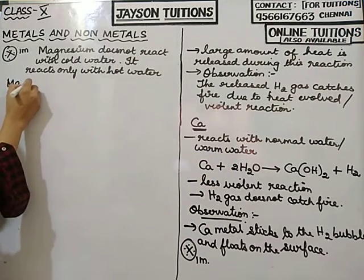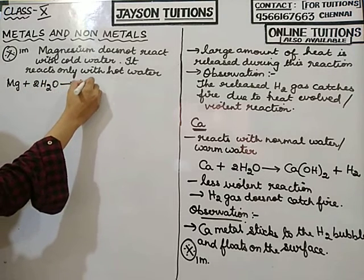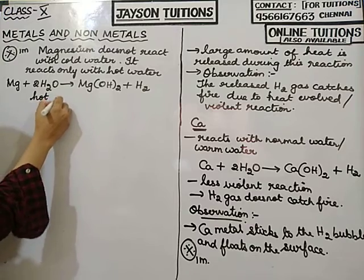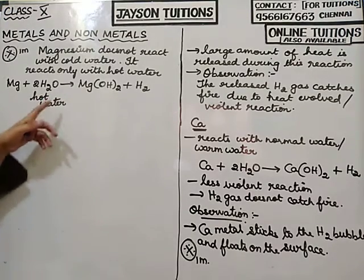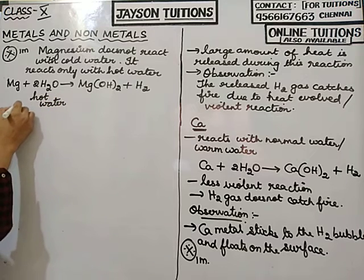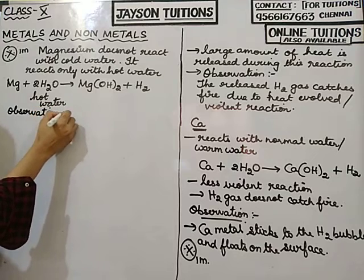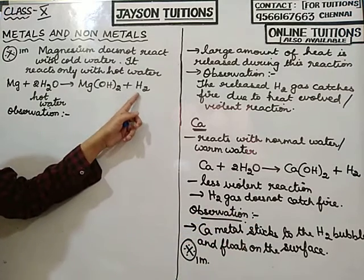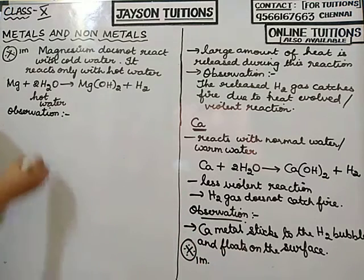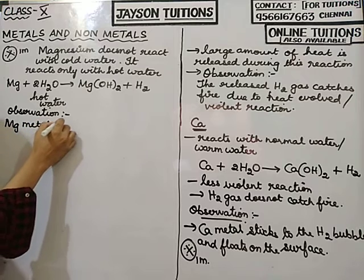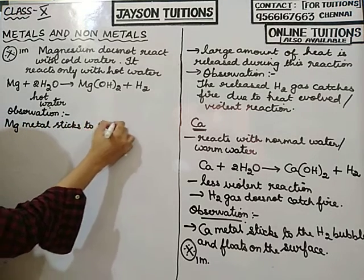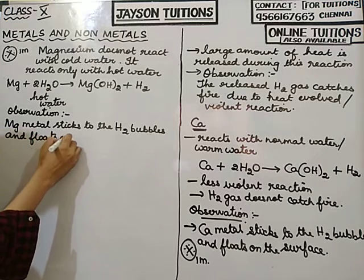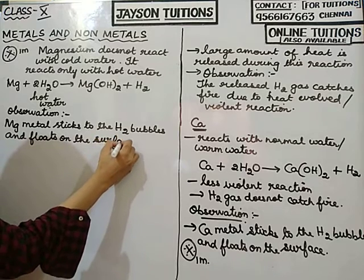Similarly, you can write for magnesium: Mg + 2H2O → Mg(OH)2 + H2, but here it is hot water. The observation for magnesium is similar to calcium — the magnesium metal sticks to the hydrogen bubbles which are formed and floats on the surface.